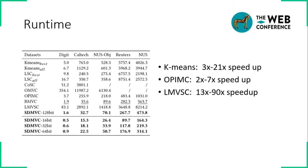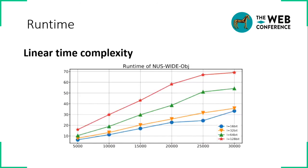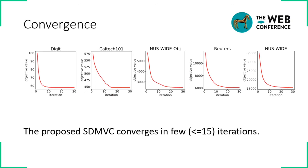Compared to k-means, our method has a speedup of 3 times to 21 times. Compared to the online method OPIMC, our method is 2 to 7 times faster. And compared to the linear complexity subspace clustering method LMVSC, our method is 13 times faster. Running time of our method increases linearly with the sample size. Finally, our proposed method converges in few, often less than 15 iterations.